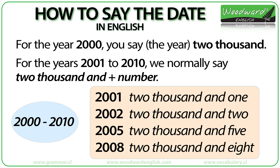For the year 2000, you say the year 2000. For the years 2001 to 2010, the most common way of saying the year is 2000 AND plus the number. Listen to these examples: 2001, 2002, 2005, 2008. See our other video about how to say the year in English for more details and exceptions.